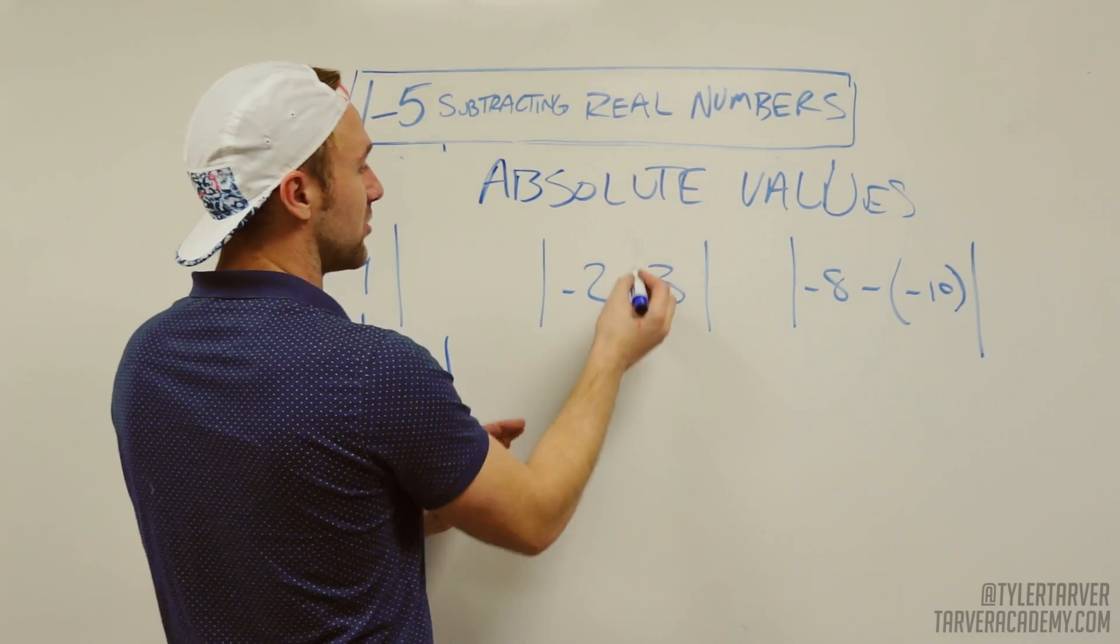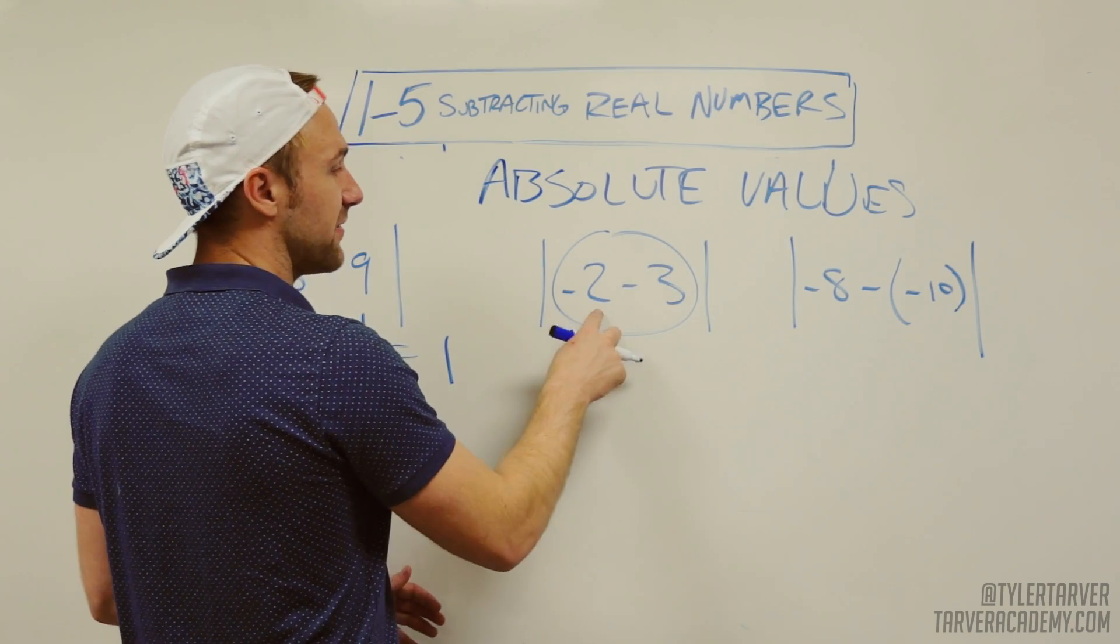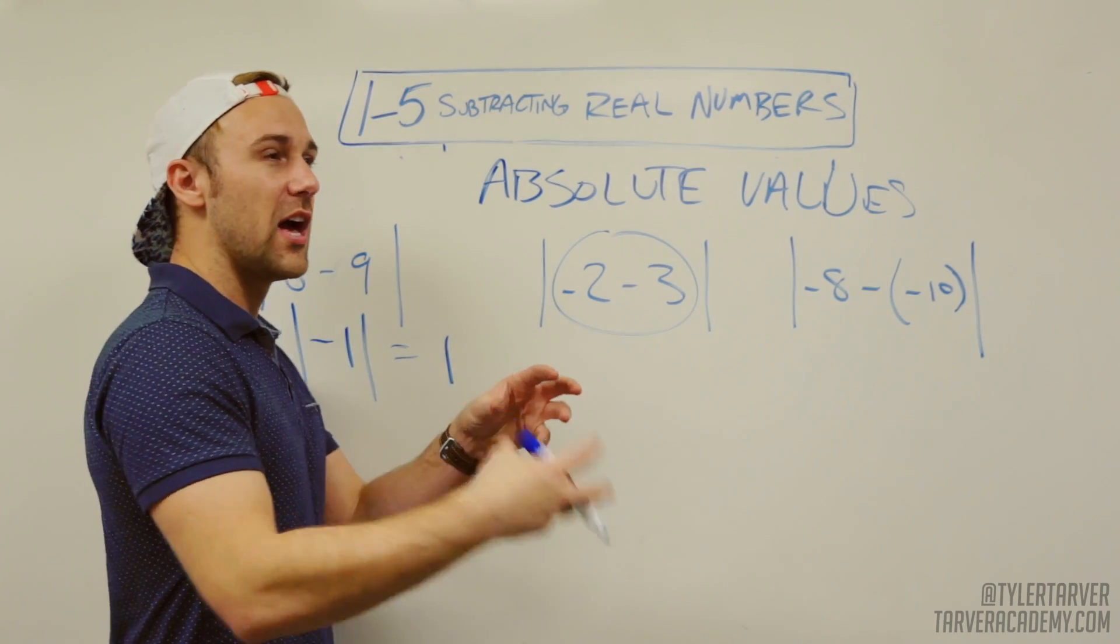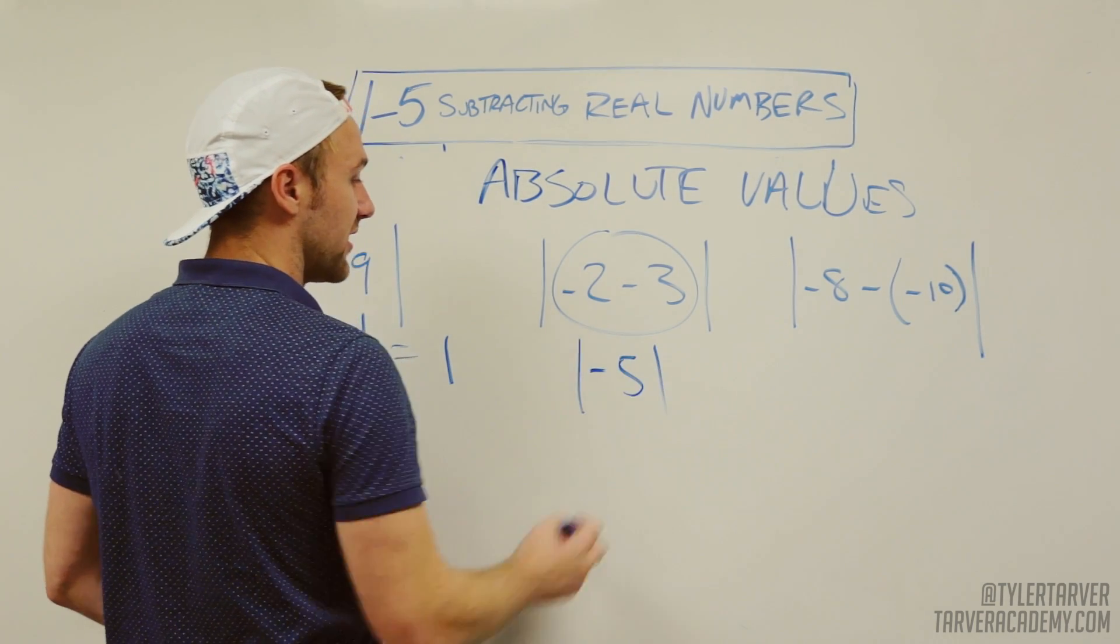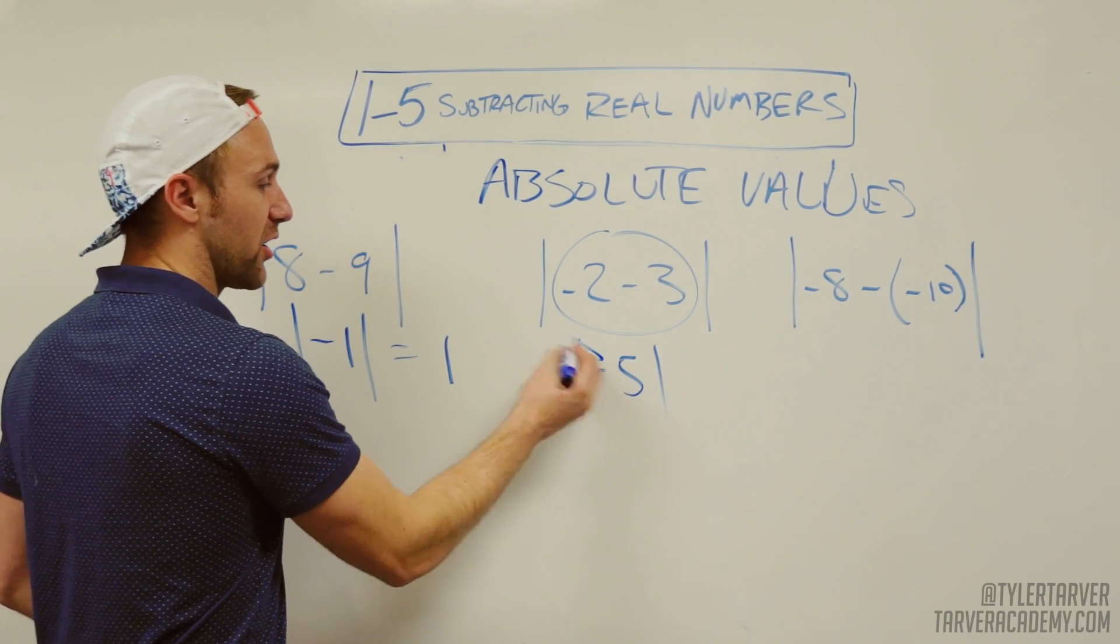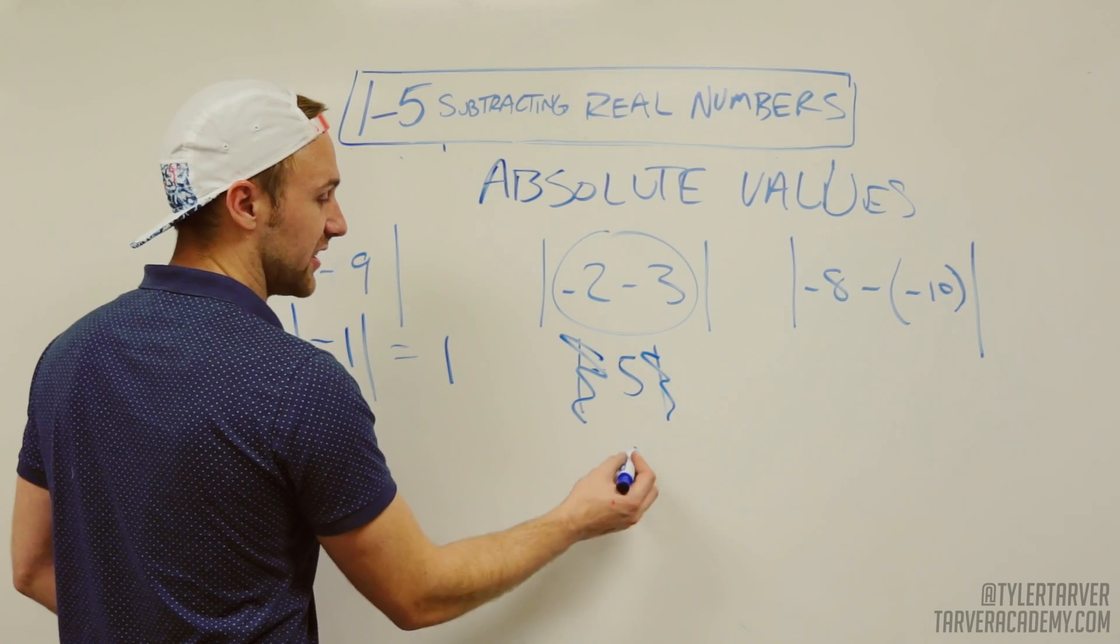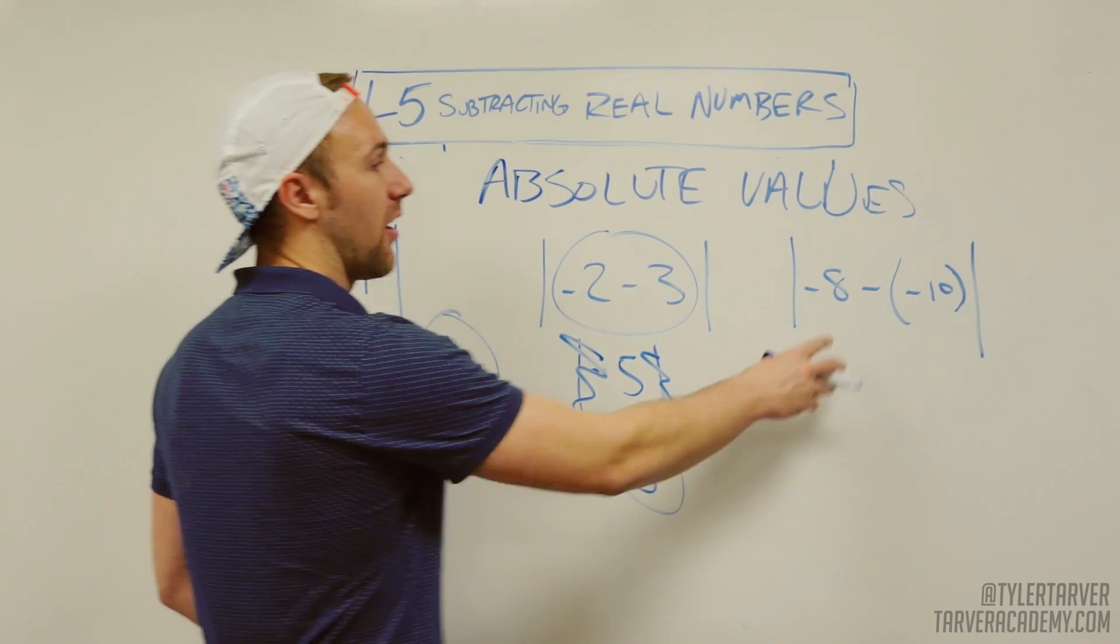So let's do this one. Again, they work like parentheses. So we're just gonna work this first. Negative two minus three means I got negative two. I'm gonna make it a bigger negative. So it's negative five. Absolute values are there. Absolute values, they're gonna destroy that negative and in the process destroy themselves. We have a positive five.